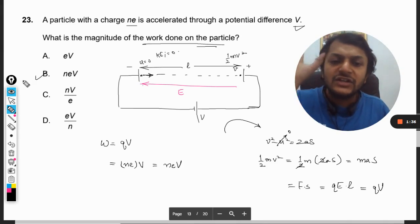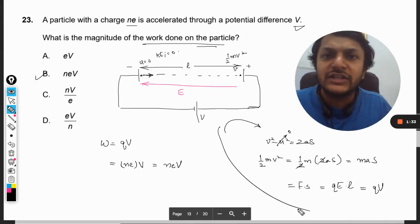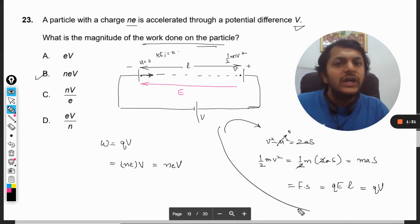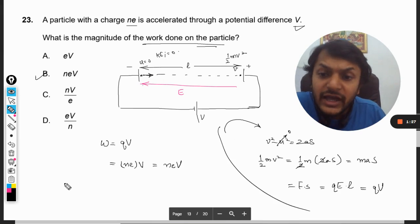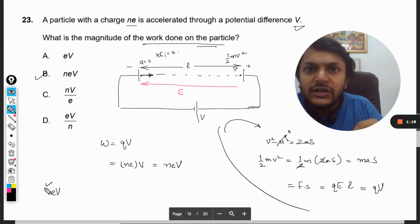I have given you the derivation for this formula, although that was not required because there is a unit in electrostatics for energy given by electron volt. If you are aware of electron volt, it is defined like this only.